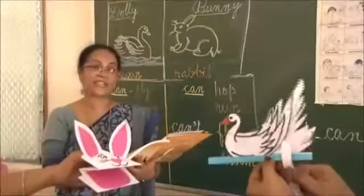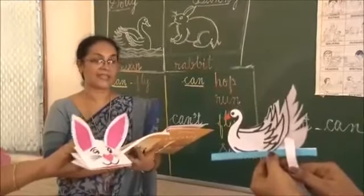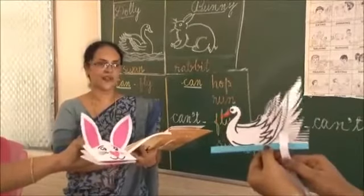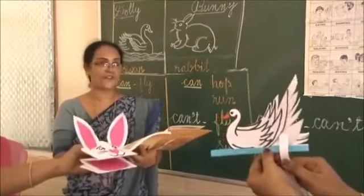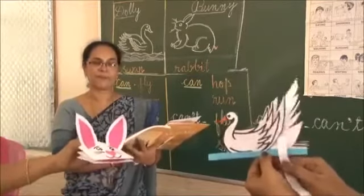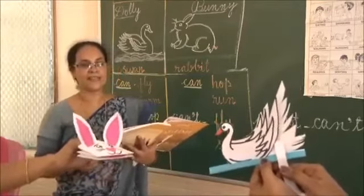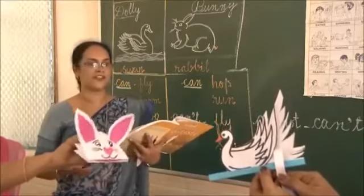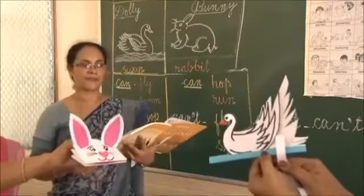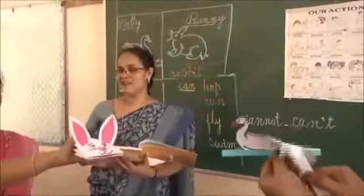I cannot hop. I can fly. Can you fly? I cannot fly. I can run. Can you run? I cannot run. You cannot fly. I cannot hop. You cannot swim. Yes, I cannot fly. You cannot hop. I cannot swim. And you cannot run. Thank you children for watching this dialogue between the swan and the rabbit.